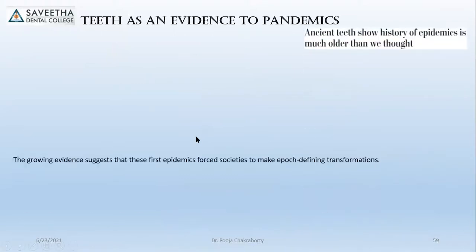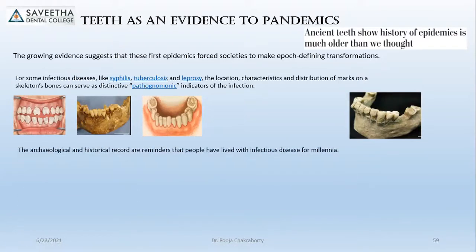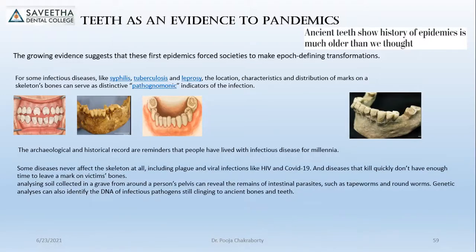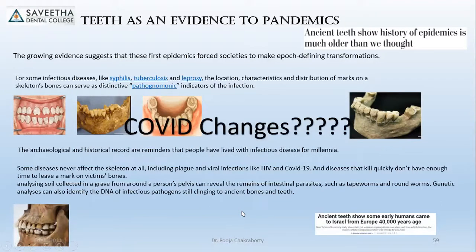Teeth serve as evidence of pandemics. Hutchinson's teeth — including mulberry molars — are a prominent sign indicating that epidemics and pandemics existed in the past and forced important changes. Some viral diseases like HIV and previously COVID-19 were considered not to cause bone-related disorders because they kill people quickly, in which case soil analysis or DNA analysis of pathogens would be helpful. However, recent articles suggest COVID-19 is also leading to changes in alveolar bone patterns that may be found in later generations.